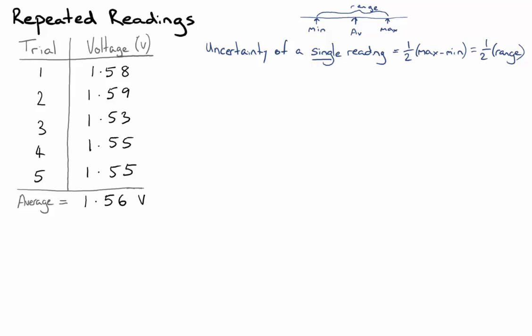It's important to note that this value that you calculate here, so the half range, is not always going to be the same as your instrumental uncertainty. And that's because there could be other things at play, which are causing additional random uncertainties, like we've discussed before.